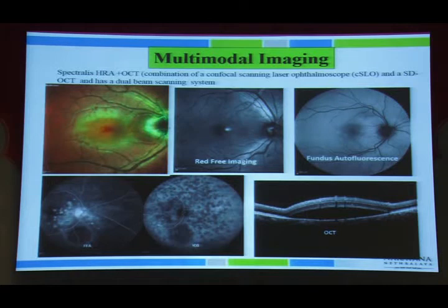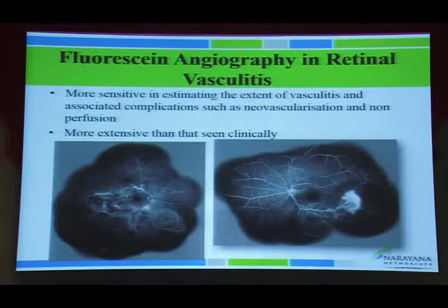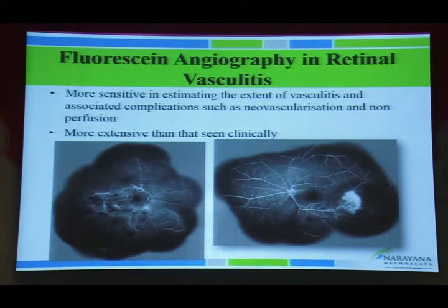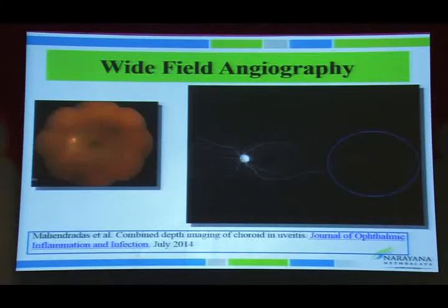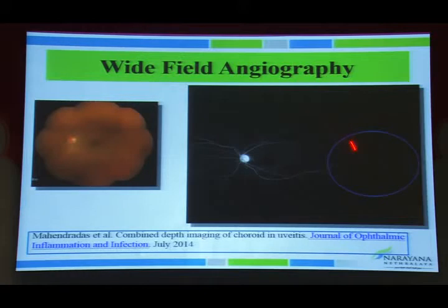Optical coherence tomography — the in-vivo biopsy of the retina — can localize the level of pathology at tissue level. Fluorescein angiography is more sensitive for retinal vascular changes, especially neovascularization and capillary non-perfusion. Wide-field angiography done using the Optos 200 can pick up peripheral changes: in one case with vitritis and apparently normal fundus photography, FFA showed perivascular leak in the temporal retinal periphery suggesting active inflammation that would have been missed with conventional angiography.